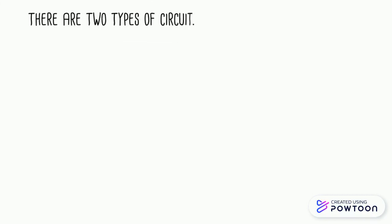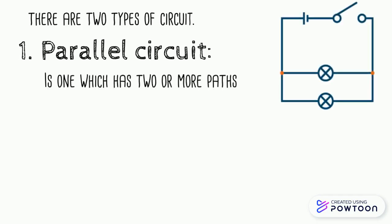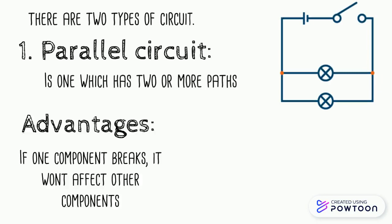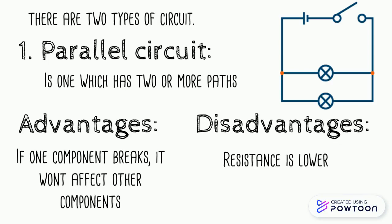There are two types of circuits. A parallel circuit is one which has two or more paths. If one component breaks, it won't affect other components. Disadvantage: resistance is lower.